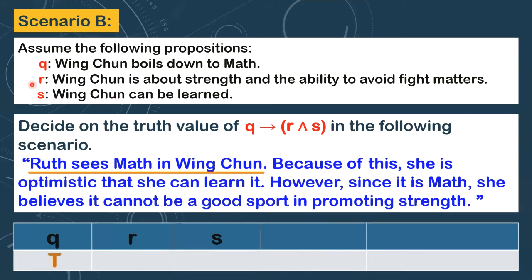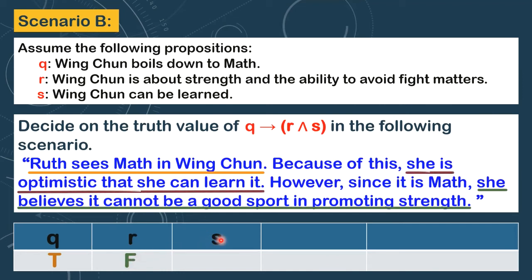What about statement R? She believes it cannot be a good sport in promoting strength — so R is false, because this is the opposite of what R states. And what about S? She is optimistic that she can learn it, meaning Wing Chun can be learned, so S is true. Now let's get the truth value of R and S. We combine R (false) and S (true) — this is a conjunction. When there is even one false value combined using the word 'and,' the result is also false.